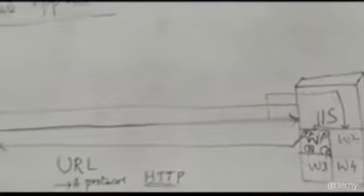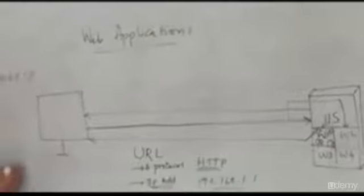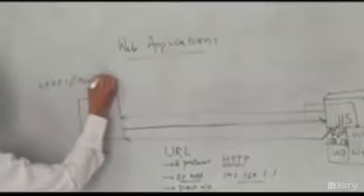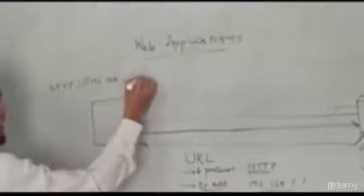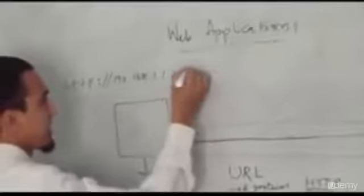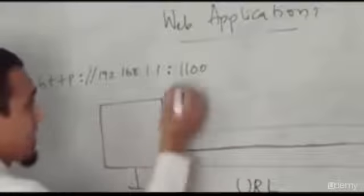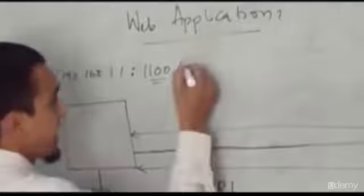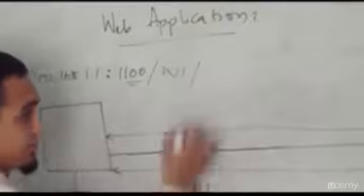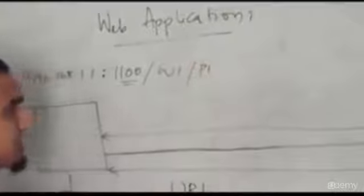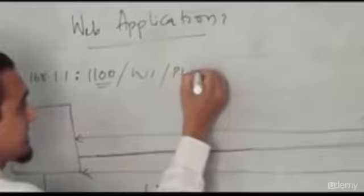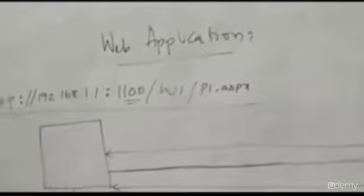If I put it all together, my URL looks like this: HTTP colon slash slash IP address 192.168.1.1, colon port number 1100, slash directory name W1, slash webpage t1.aspx — if developed using .NET, the extension is .aspx. So this is my complete URL, and using this I will be accessing my application.